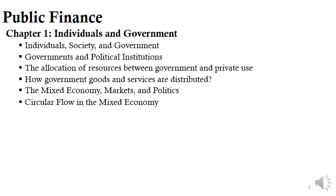Governments can perform all of their functions through political institutions, which constitute the rules and generally accepted procedures that evolve in a community for determining what government does and how government outlays are financed. Then we turn to the allocation of resources between government and private use.